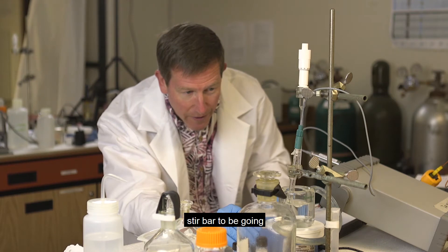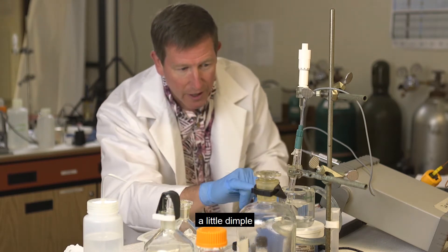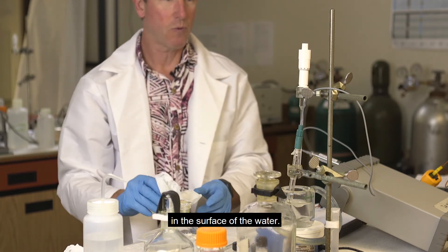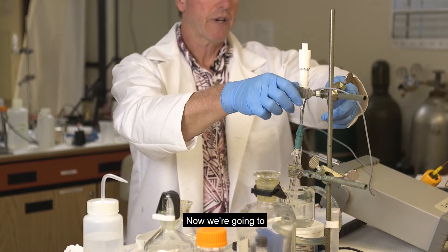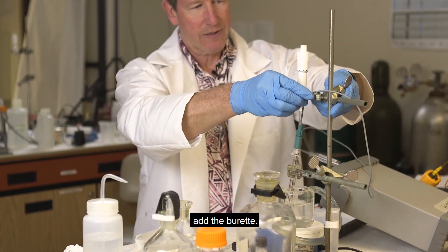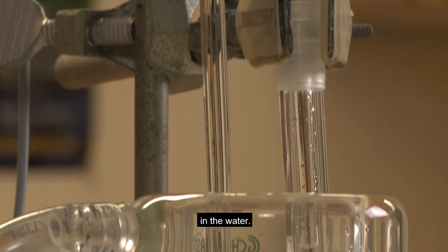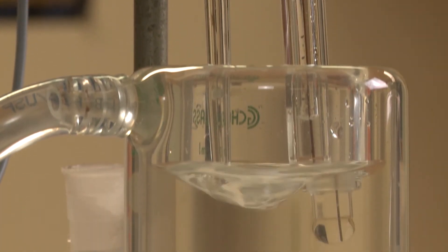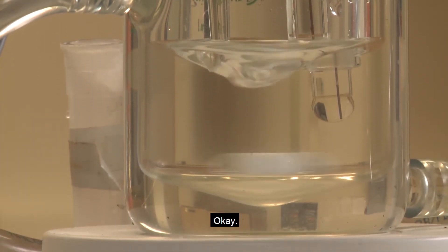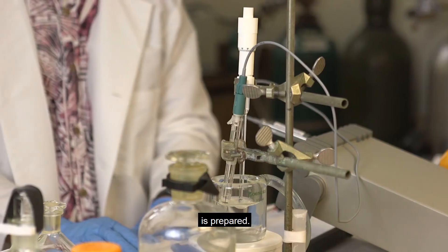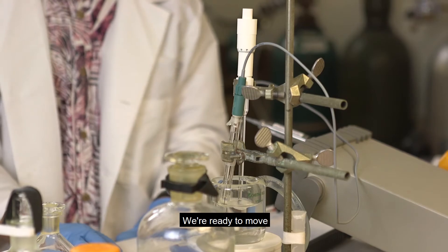And you want the stir bar to be going fast enough to just create a little dimple in the surface of the water. Now we're going to add the burette. You want just the very tip of the burette to be in the water. Okay, so now the sample's prepared, we're ready to move on to step three.